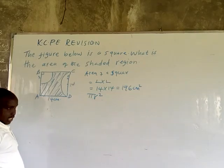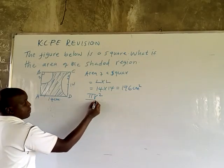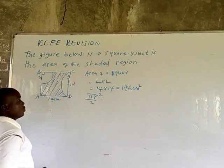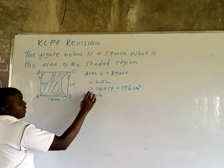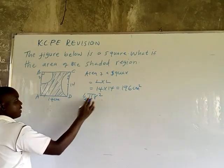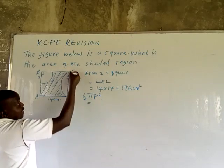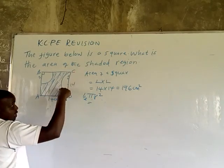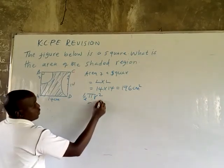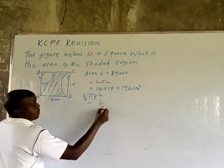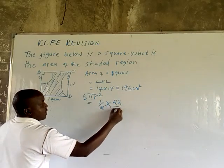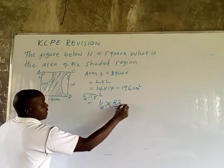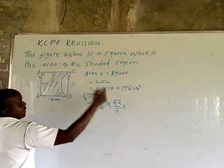That is the area of the semicircle. We want the area of the semicircle, so we divide by 2 — a half. A half of this will give us the area. So it is a half times 22 over 7, times radius. The radius is 7.